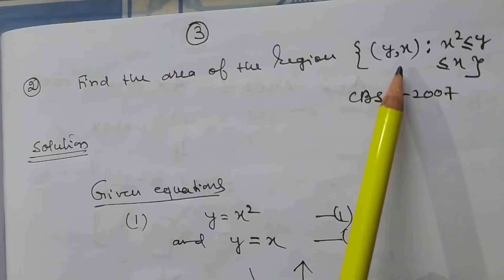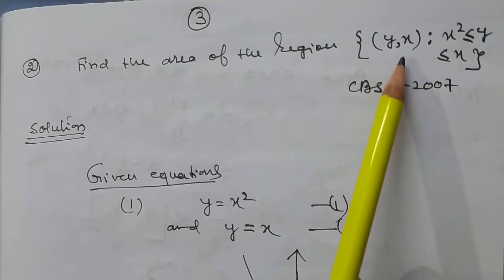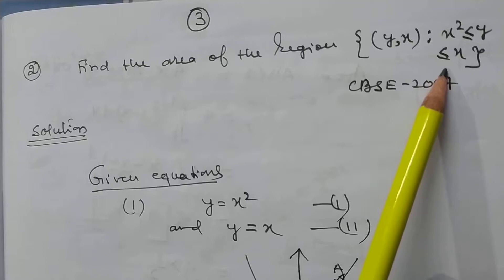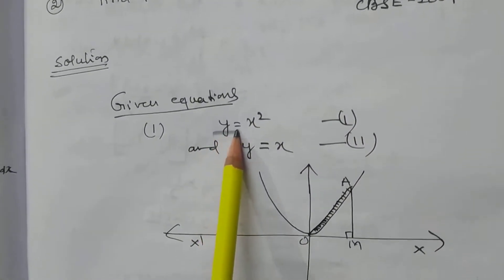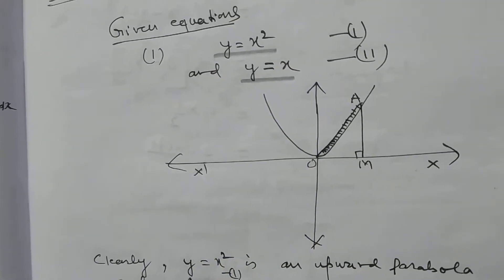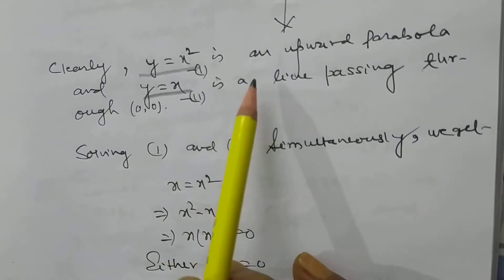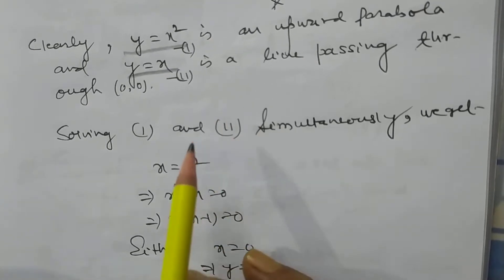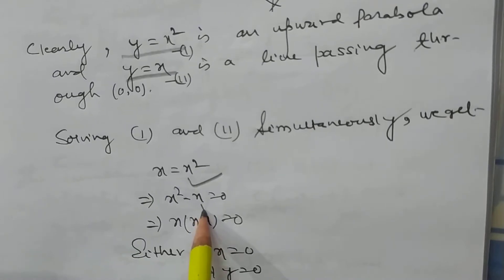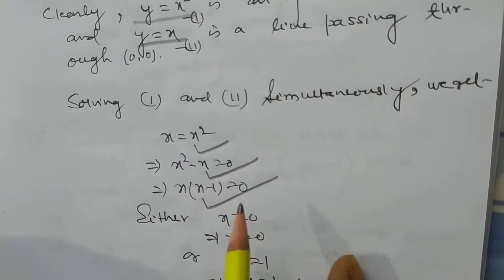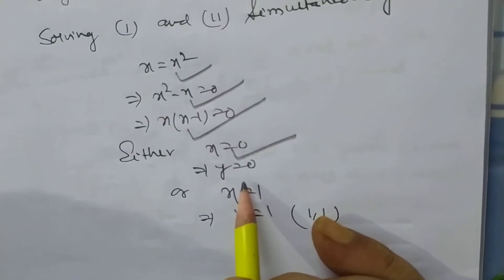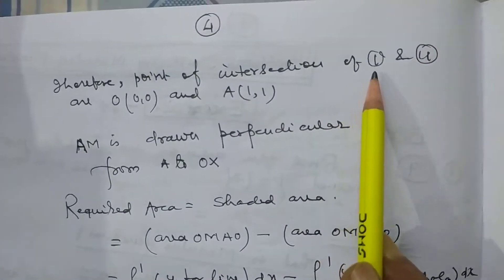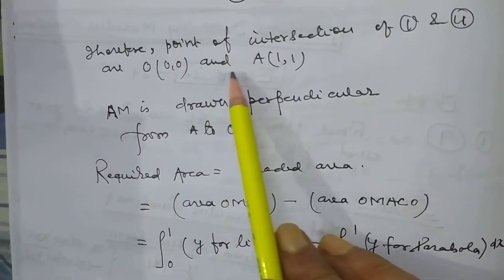Find the area of the region {(x, y) : x² < y ≤ x}. Here y = x² and y = x. To find the point of intersection, we set x = x², giving x² − x = 0, so x(x − 1) = 0. When x = 0, y = 0; when x = 1, y = 1. Therefore the points of intersection are O(0, 0) and A(1, 1).